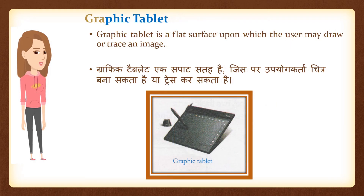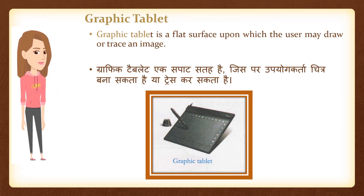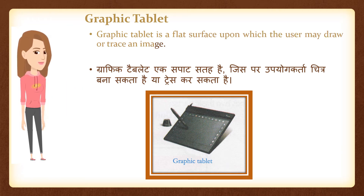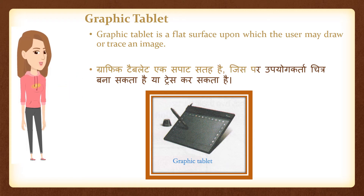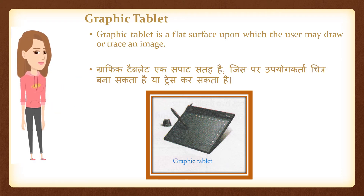Graphic tablet and Electronic light pen: A tablet is a flat surface on which the user can draw or trace. Tablet ek sapat satah hai, jis par upyog karta chitra bana sakta hai ya trace kar sakta hai.